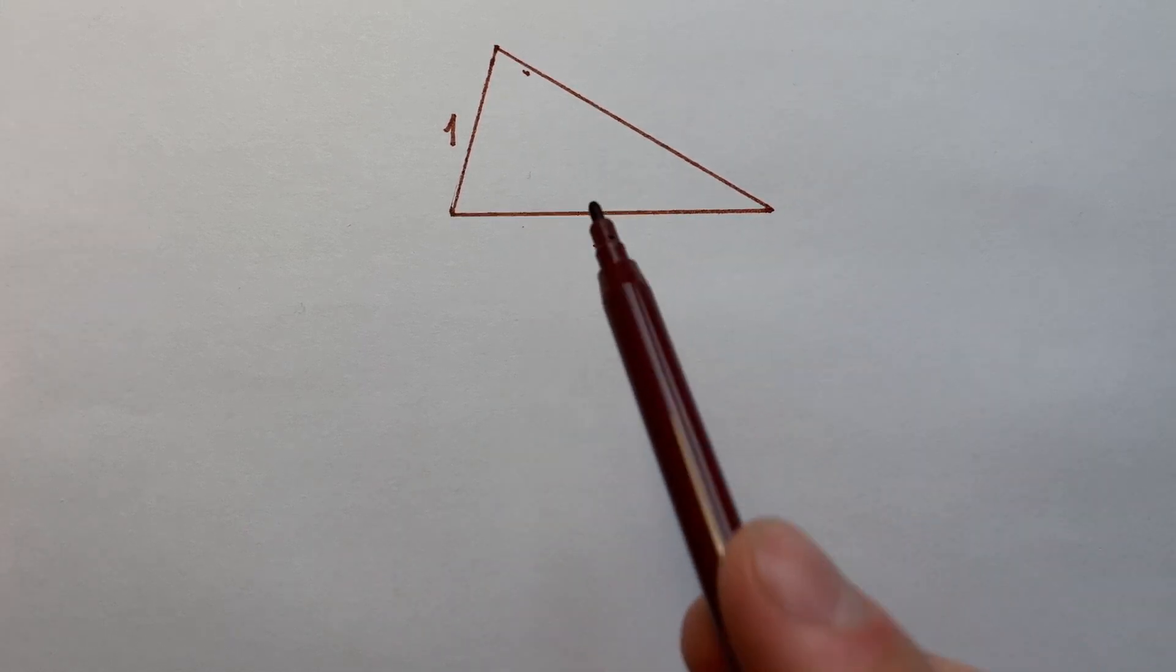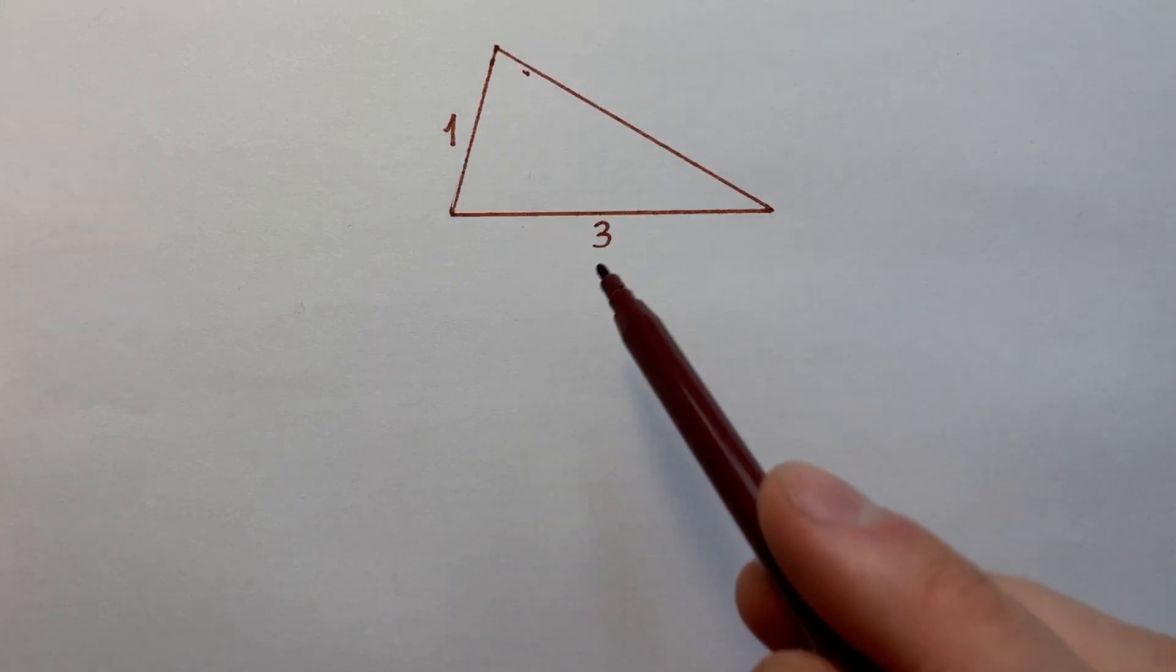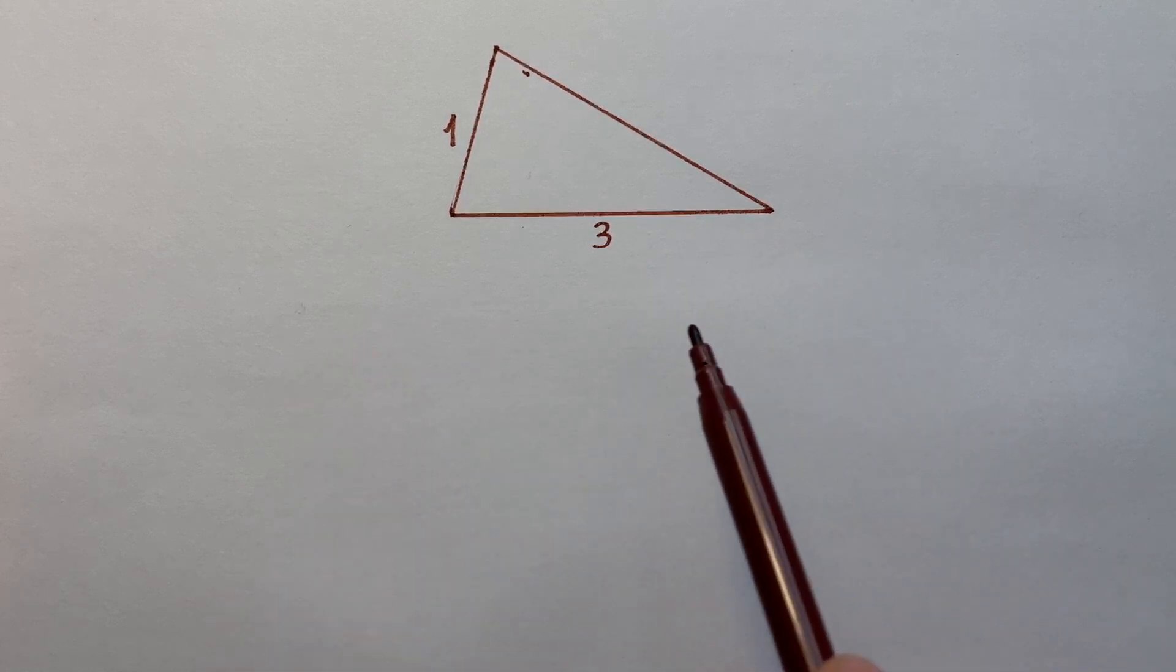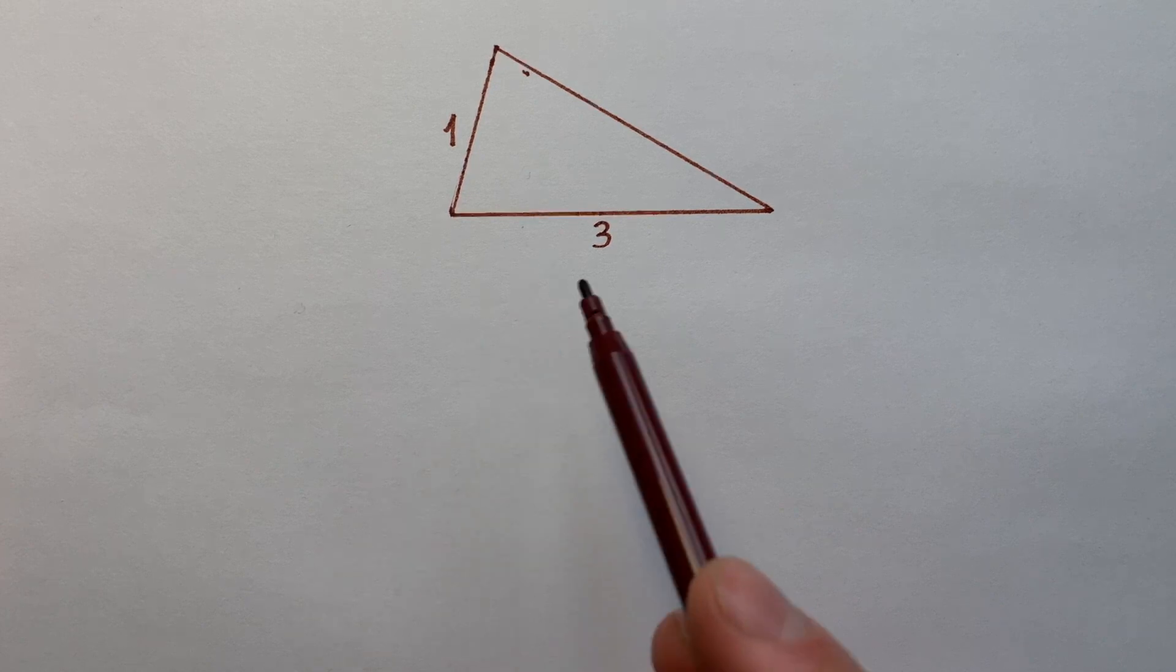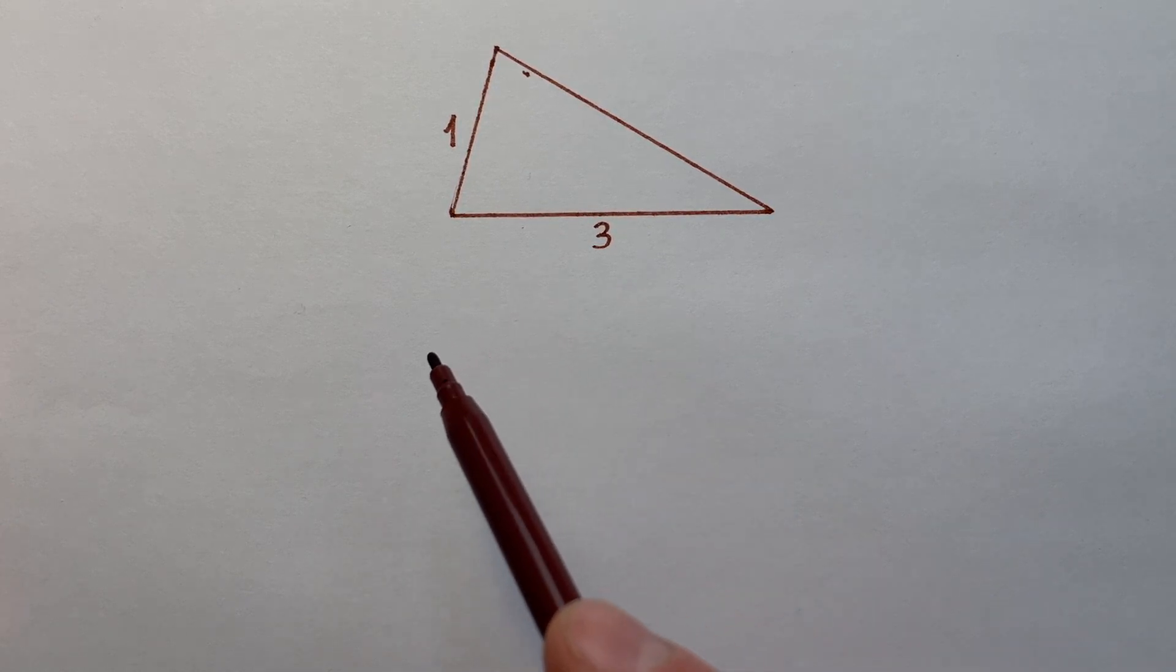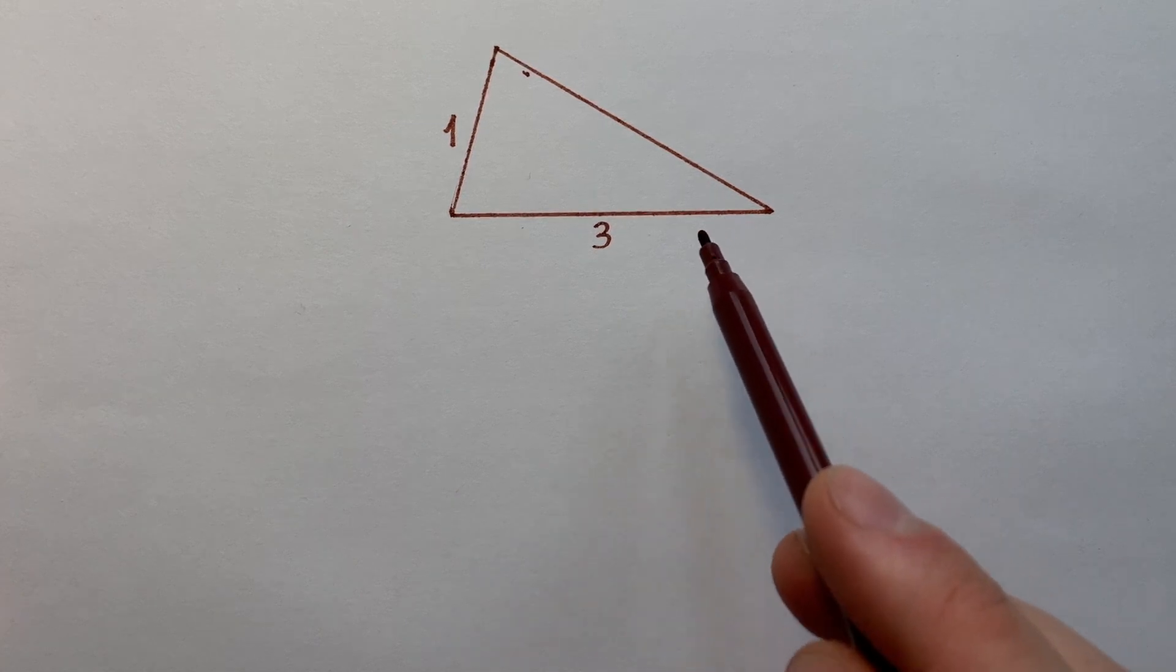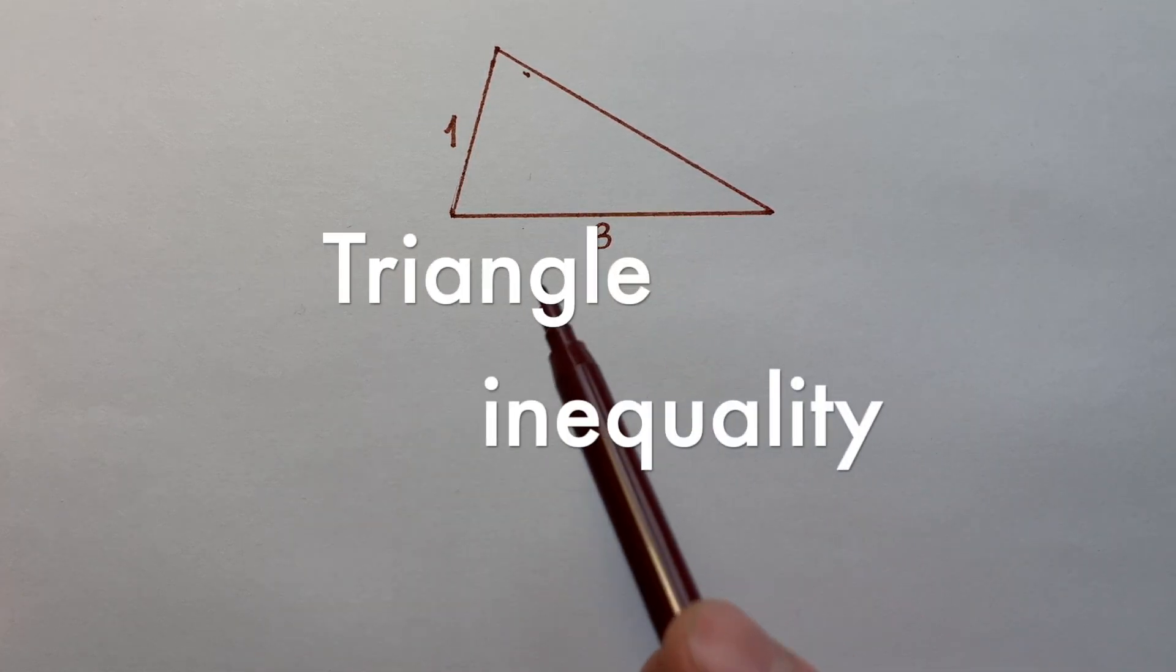If we had only one angle, we could initially write theorem of cosines and this question is solved. But unfortunately it's impossible here. What formula of triangle we know which does not contain angles? Of course, it's triangle inequality.